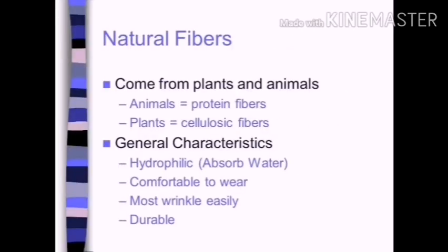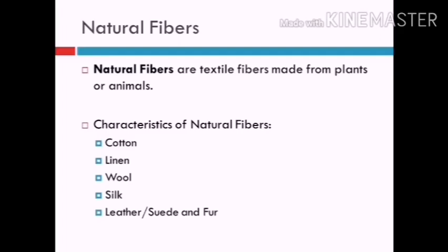Natural fibres come from plants and animals. Animal fibres are also called protein fibres and plant fibres are also called cellulosic fibres. The general characteristics of natural fibres are: first, hydrophilic — meaning they absorb water; second, comfortable to wear; third, most wrinkle easily; and fourth, durable. Some natural fibres are cotton, linen, wool, silk, leather, fur, etc.